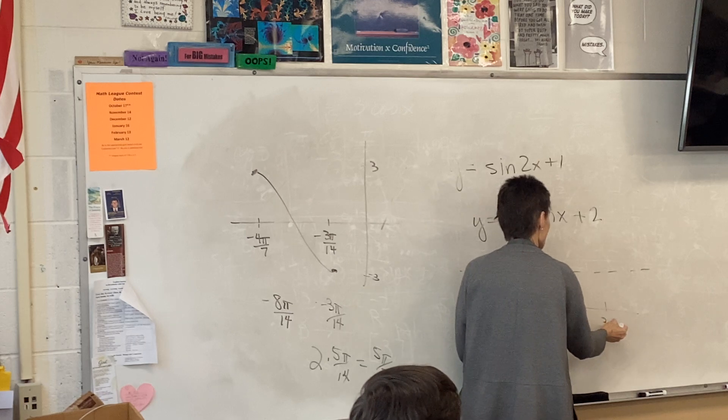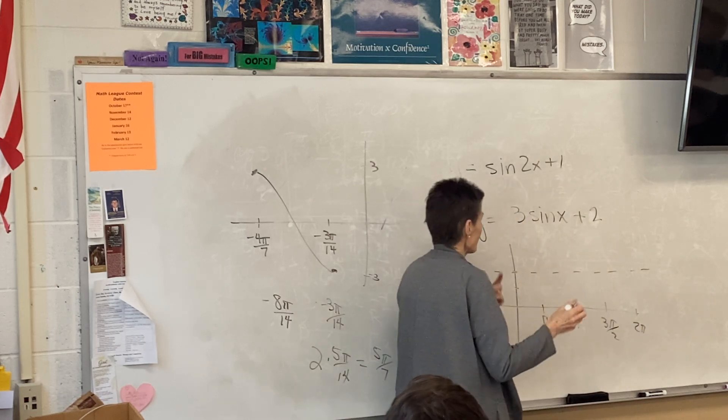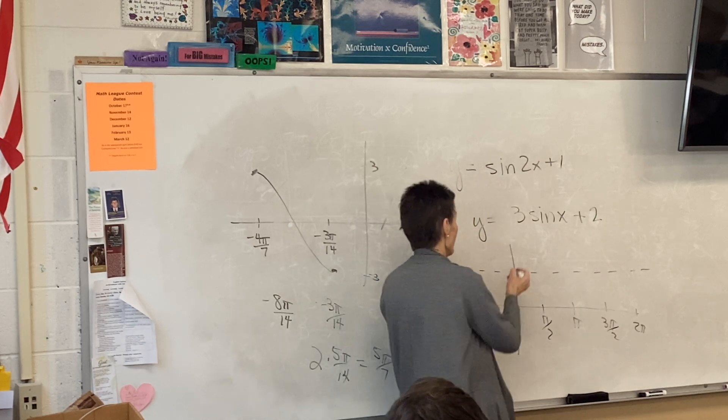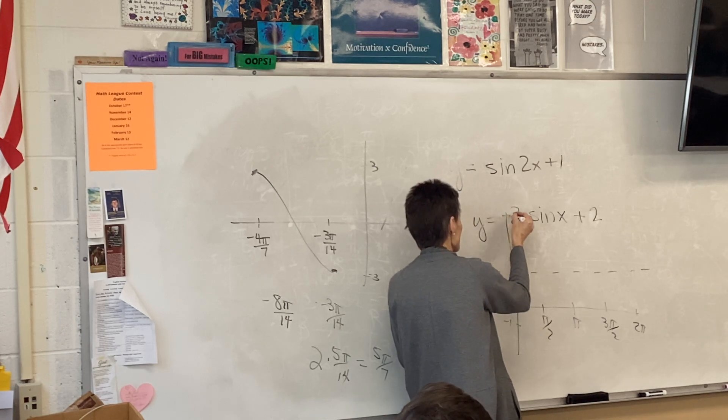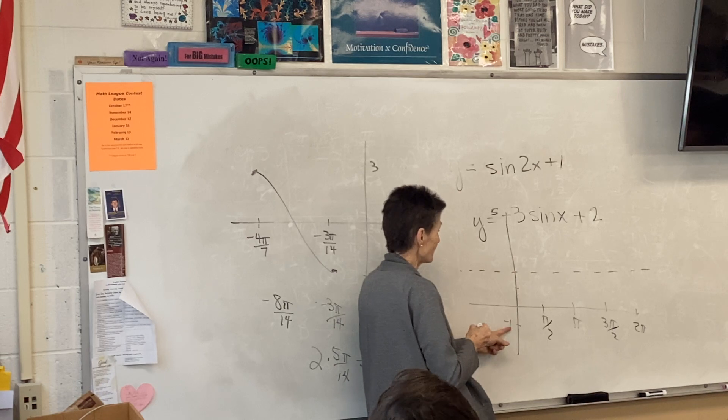It's going to be, look at 2, it does not have a phase shift, I mean, yeah, it does have a phase shift, it doesn't have a period change, but it does have an amplitude of 3, so it's going to have to go all the way up to 5 and all the way down to negative 2.